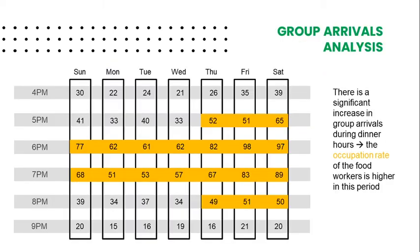On the other hand, the group's arrival rate varies throughout the day, with a peak in demand during dinner time. This peak is higher and broader at the end of the week, and the occupation rate of the food workers is also higher in this period.